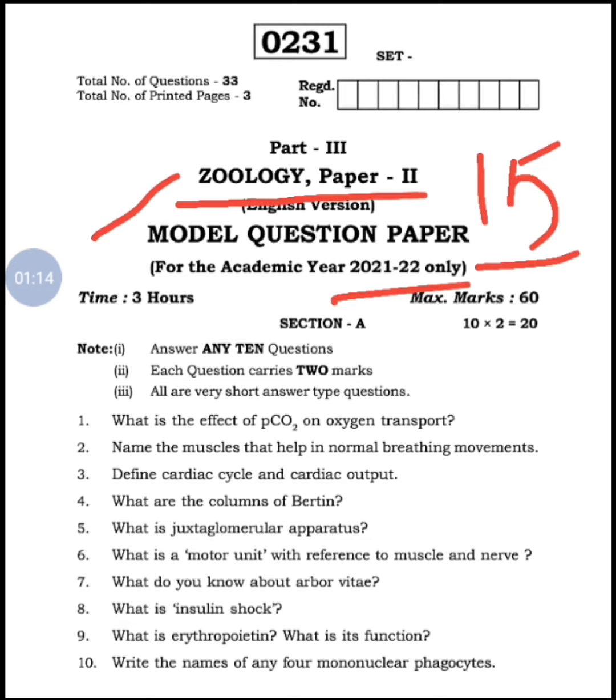Let's enter into the concept without delay. In Section A, previously there were 10 questions with no choice, but as it is a pandemic situation, they are giving you 15 questions and you should attempt only 10. This is the new information for you.